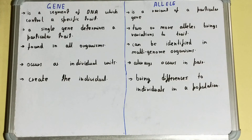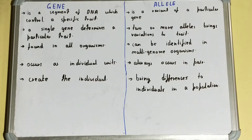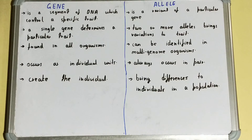So this was all about the difference between gene and allele. A gene is a characteristic or quality present in DNA, but an allele refers to the different variations of that same quality or characteristic in different individuals.